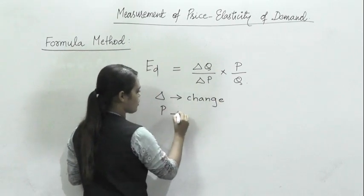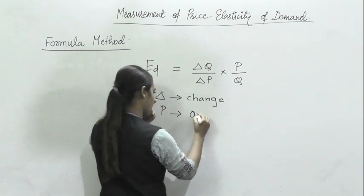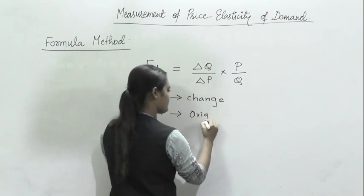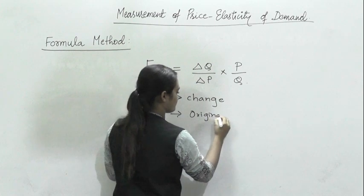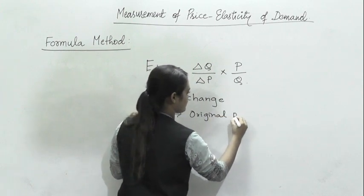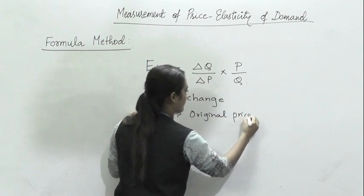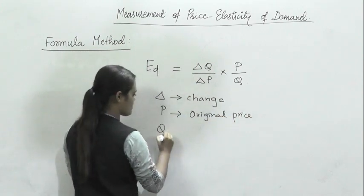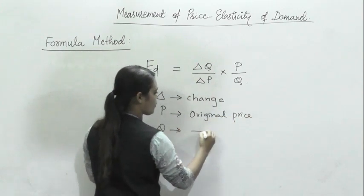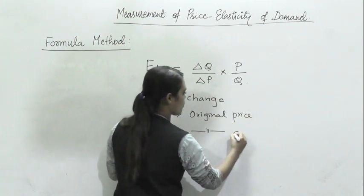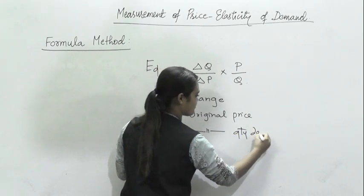Here, P is your original price and Q is your original quantity demanded.